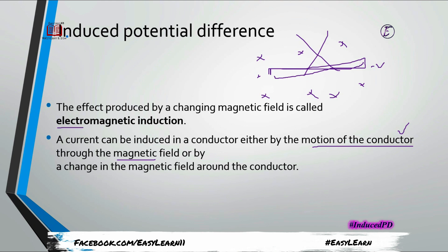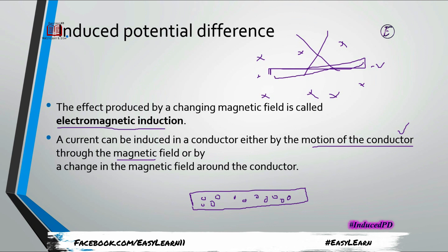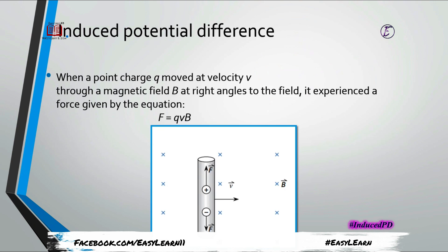This process is called electromagnetic induction, because electricity is produced. There are many free charges available in the conductor, and when we do this, the positive charges try to move to one side of the conductor — for example, this side becomes positive — while negative charges try to come to the other side, making this side negative.